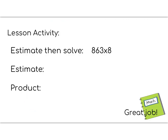Since today's lesson was an easy one, we're going to go ahead and start our lesson activity. Today's lesson activity is to estimate and then solve. You're going to estimate 863 times 8. Since there's a 6 in the middle, 863 is closer to 900 when you estimate. So start by estimating 900 times 8 and then find the final product. Remember this needs to be done in your math notebook and ready to show your teacher. Great job on your flipped lesson!